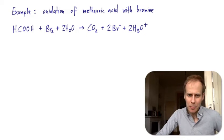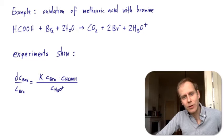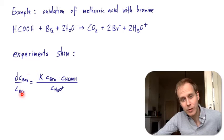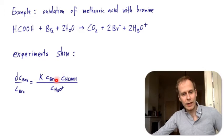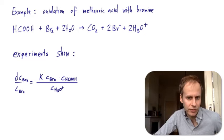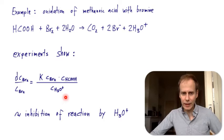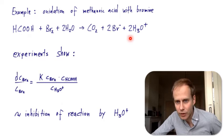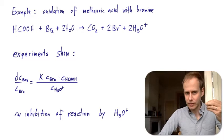We would probably write the rate law as the concentration of methanoic acid times the concentration of bromine, both first order, times the rate constant. But what experiments show is that the rate law looks different: the consumption of bromine follows a law where, in the denominator, there is the concentration of hydronium ions — the products. That's strange and doesn't look like how we would normally set up the rate equation. The concentration of hydronium ions is actually negatively affecting the rate — inhibiting the reaction. Let's see if we can understand this.